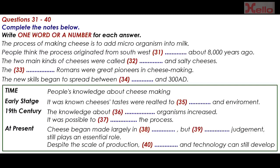Cheesemaking moved very much into the world of technology and industrial processes, although because the aim is still to produce something that people like to eat, there's still an important role for human judgment. People still go round tasting the young cheese at different stages to see how it's getting on, and may add a bit of this or that to improve the final taste. Whatever the scale of production, there is still room for the development of art alongside the technology.